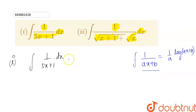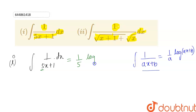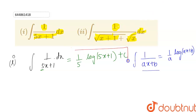Applying this formula, the value of a is 5, so it becomes (1/5) log|5x + 1| plus c, where c is the integrating constant. So the answer for the first part is (1/5) log|5x + 1| + c.